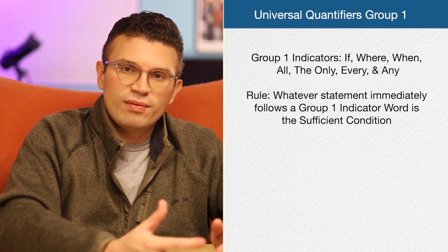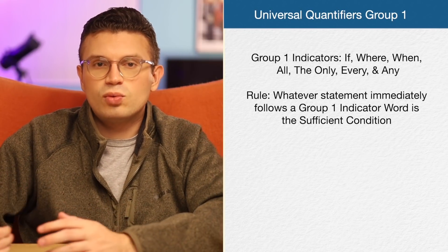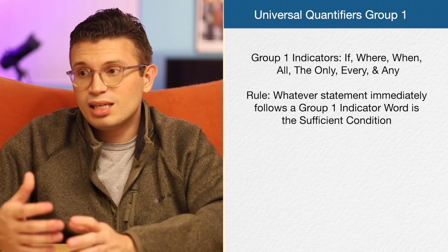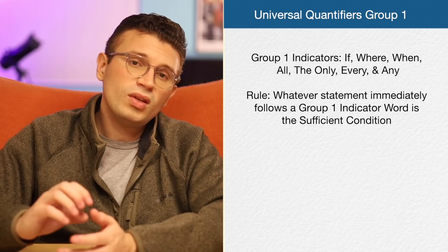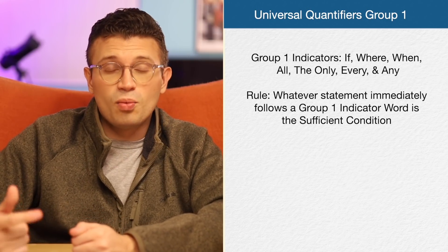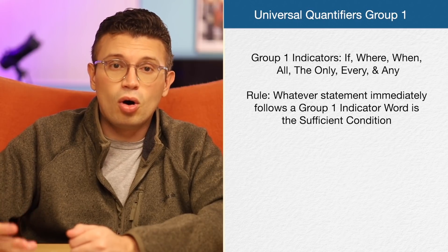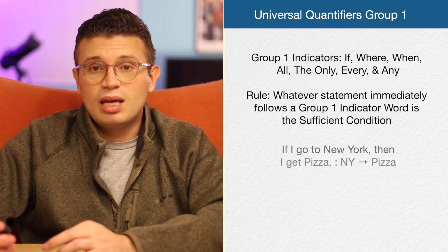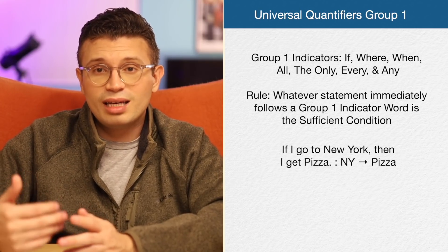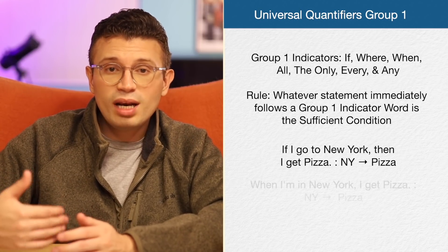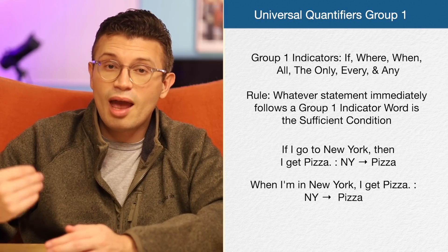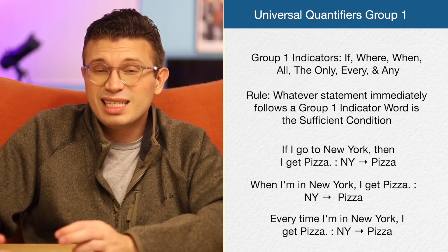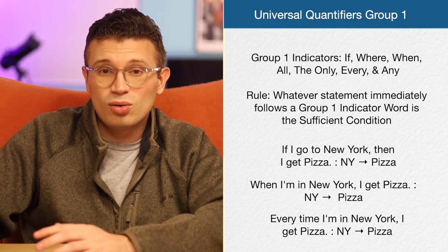First up, we have group one words. Group one words have this rule: whatever statement immediately follows a group one indicator word is the sufficient condition. These group one words are: if, where, when, all, the only, every, and any. For example: 'If I go to New York, then I get pizza.' 'When I'm in New York, I get pizza.' 'Every time I'm in New York, I get pizza.' Those are all diagrammed the same way — they're all saying the same thing because they all have the same indicator words.